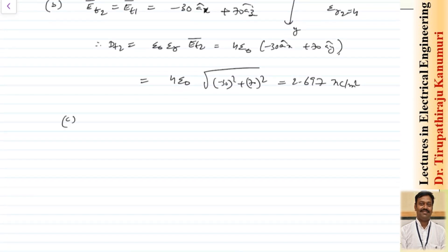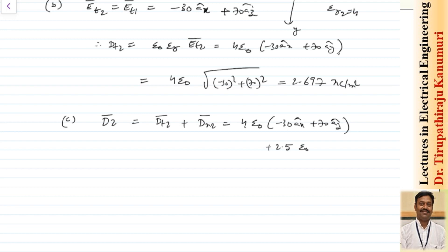For part c, the value of D2 is the vector sum of Dt2 plus Dn2. This becomes 4 epsilon naught times (minus 30 Ax plus 70 Az) plus 2.5 epsilon naught times 50 Ay. The total sum gives minus 1.062 Ax plus 1.107 Ay plus 2.479 Az nano coulombs per meter squared.